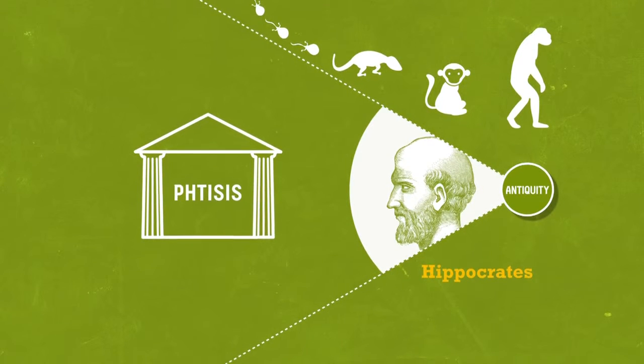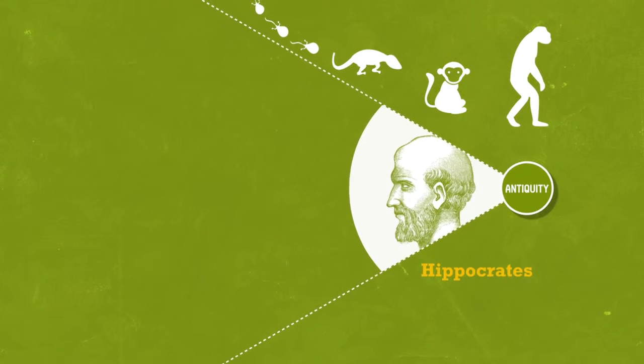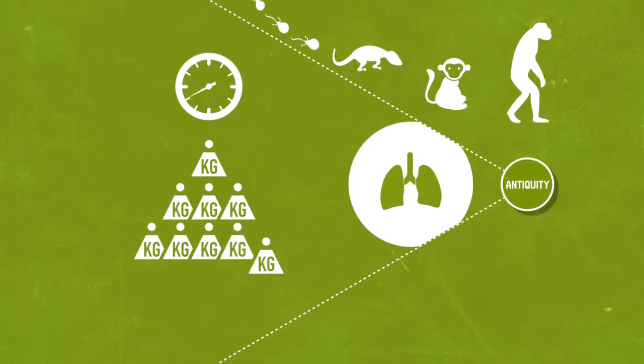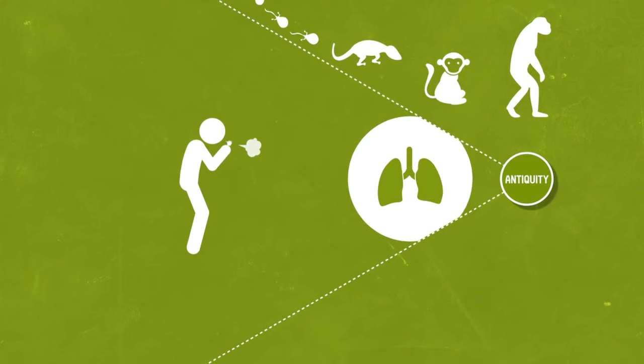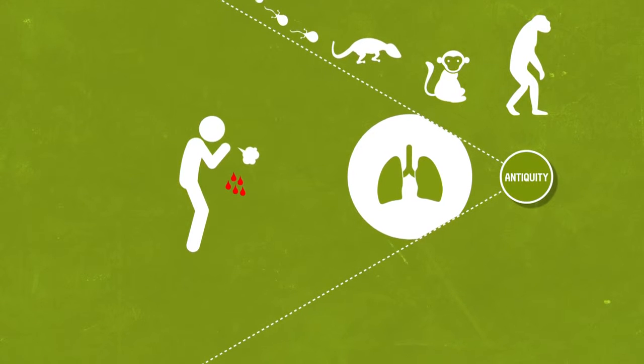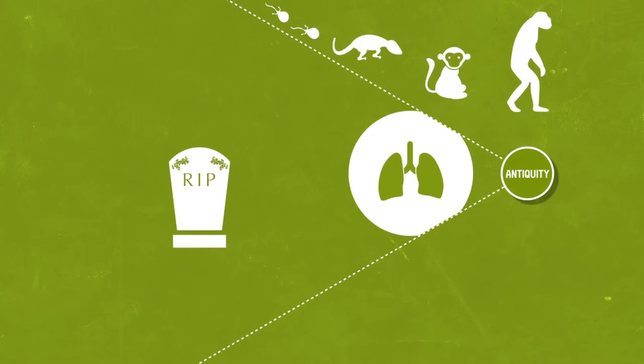It was first described by Hippocrates, a pulmonary infection manifesting itself as weight loss, a cough, and blood in the sputum, which gradually led to death.